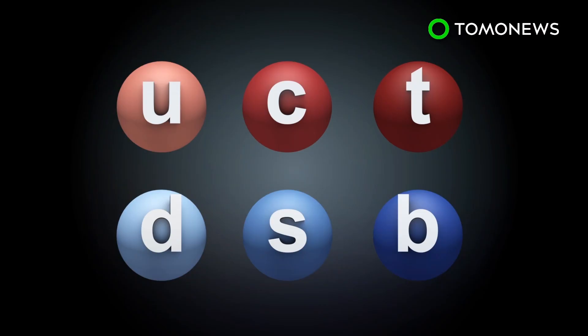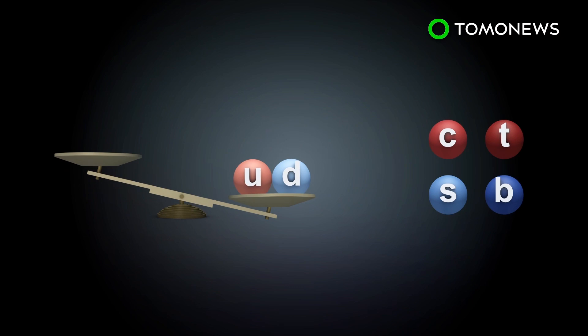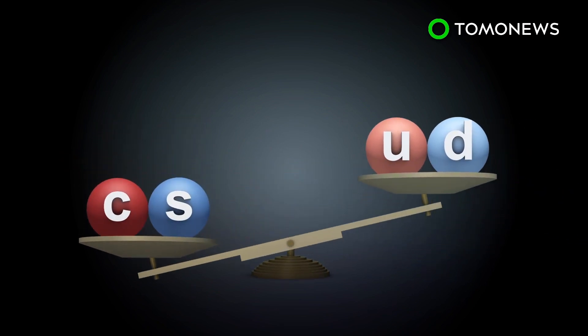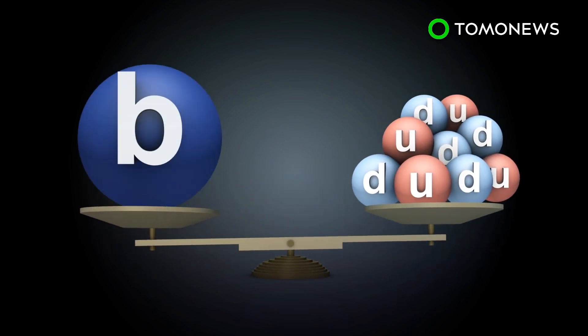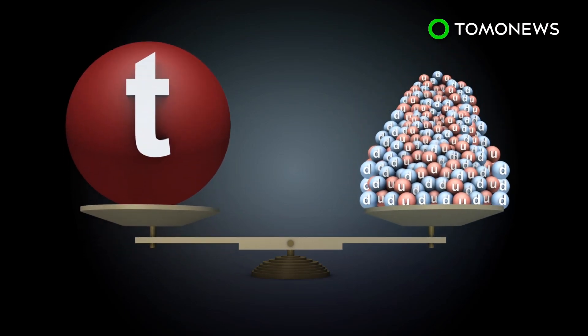The six quarks differ in size and weight, both up and down quarks being the lightest, followed by charm and strange, and then bottom quarks. Top quarks are the largest, about 100 trillion times heavier than up quarks.